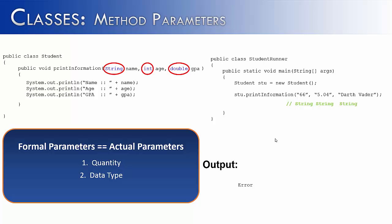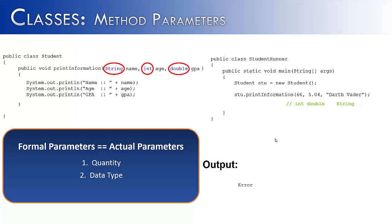Let's look at the third example. This would also result in an error, and hopefully you can see why. The data types are the same — they're just out of order. On the actual parameters it's int, double, String; and on the formal parameters it is String, int, double. So the third way that formal and actual parameters must be the same is sequence — they must be in the same order for Java to run correctly.